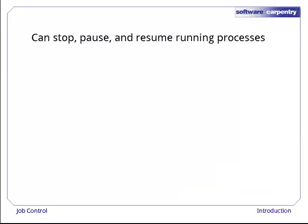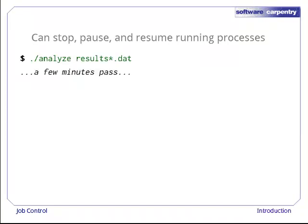The shell provides several commands for stopping, pausing, and resuming processes. To see them in action, let's run our Analyze program on our latest data files. After a few minutes go by, we realize that this is going to take a while to finish. Being impatient, we kill the process by typing Ctrl+C. This stops the currently executing program right away. Any results that are calculated but not written to disk are lost.